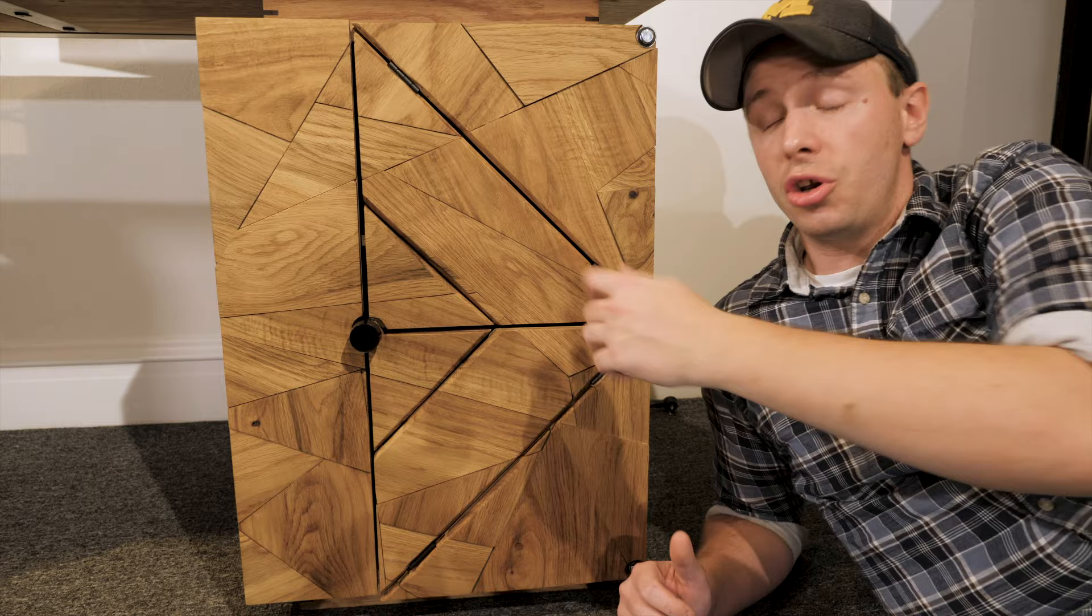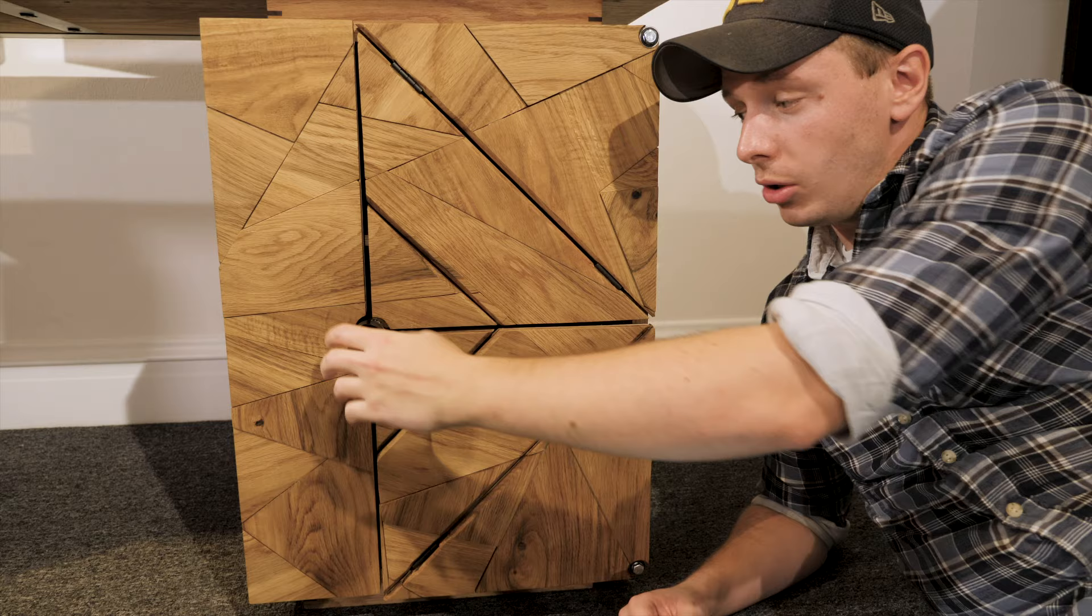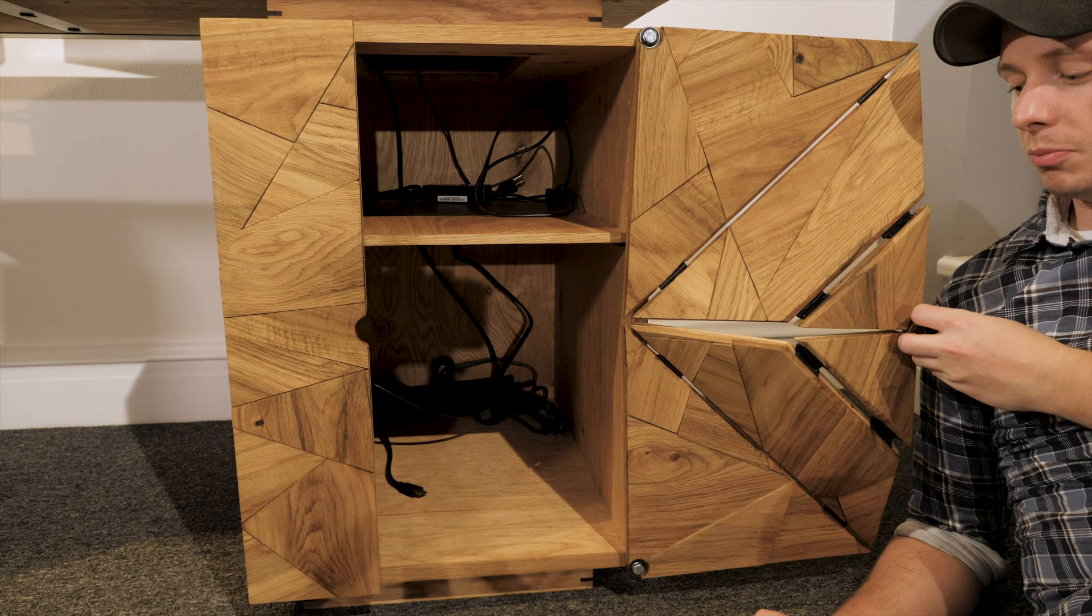The way this works is that there are three pivot points while these two larger triangles stay still. The trapezoid and smaller triangles move outwards with the use of hinges so that the door can move.